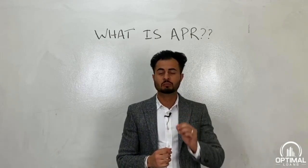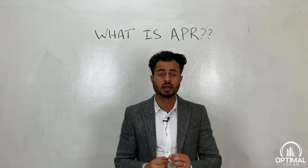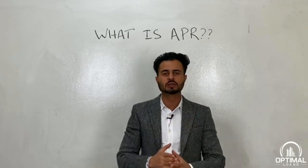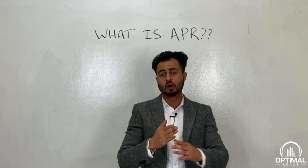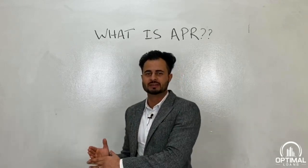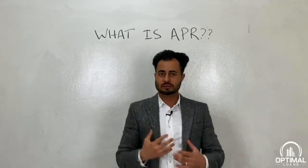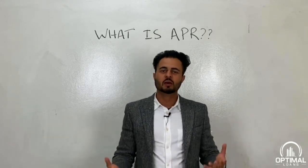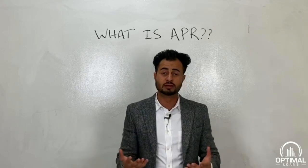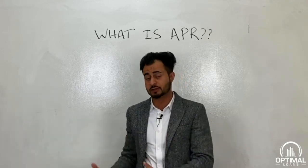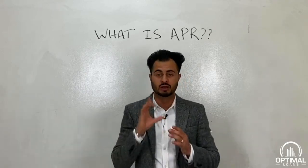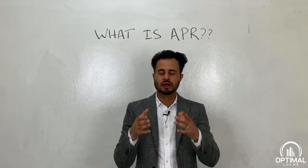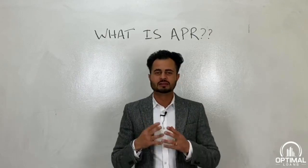Now if you're getting an adjustable rate mortgage, APRs will actually undermine your costs because the APR figure calculates your costs on a long-term basis. Why do we have APR? The regulators require all lenders to disclose this figure to you, the consumer. So we have to disclose an APR on a deal — that's just the requirement.